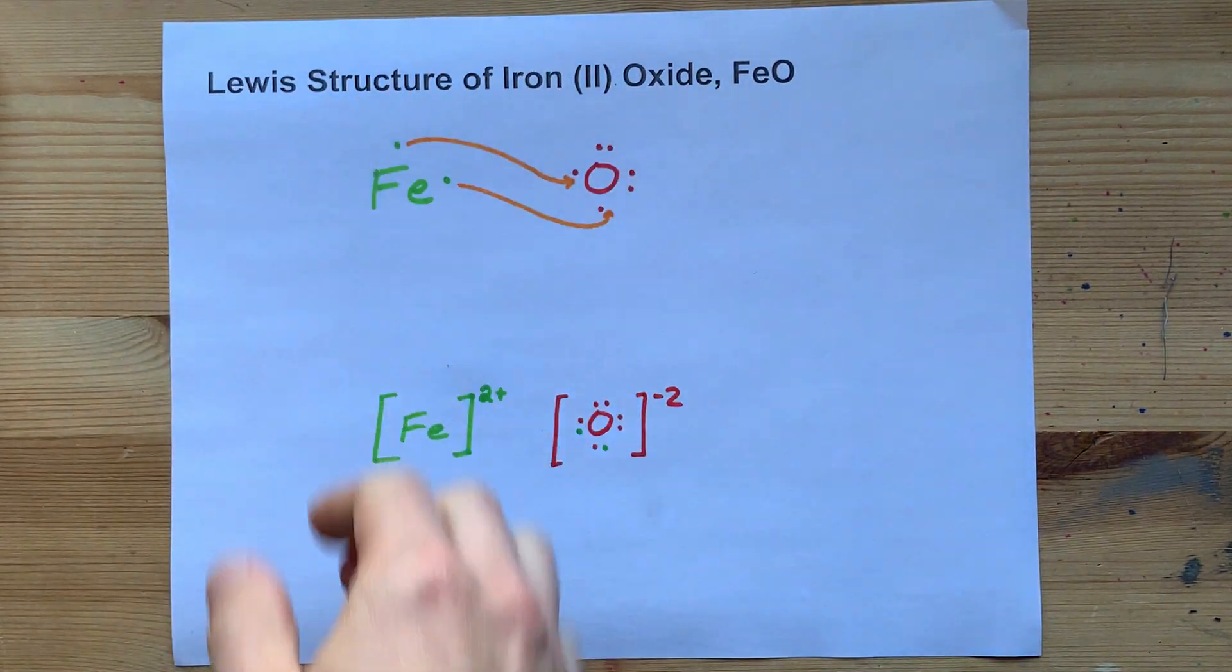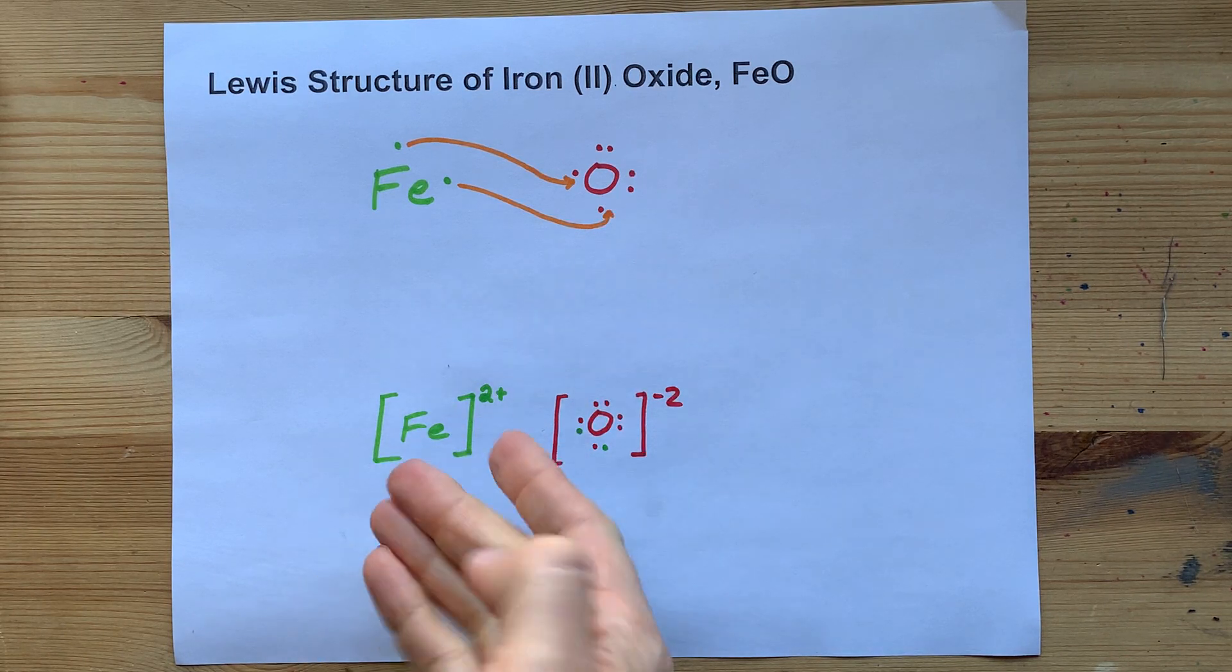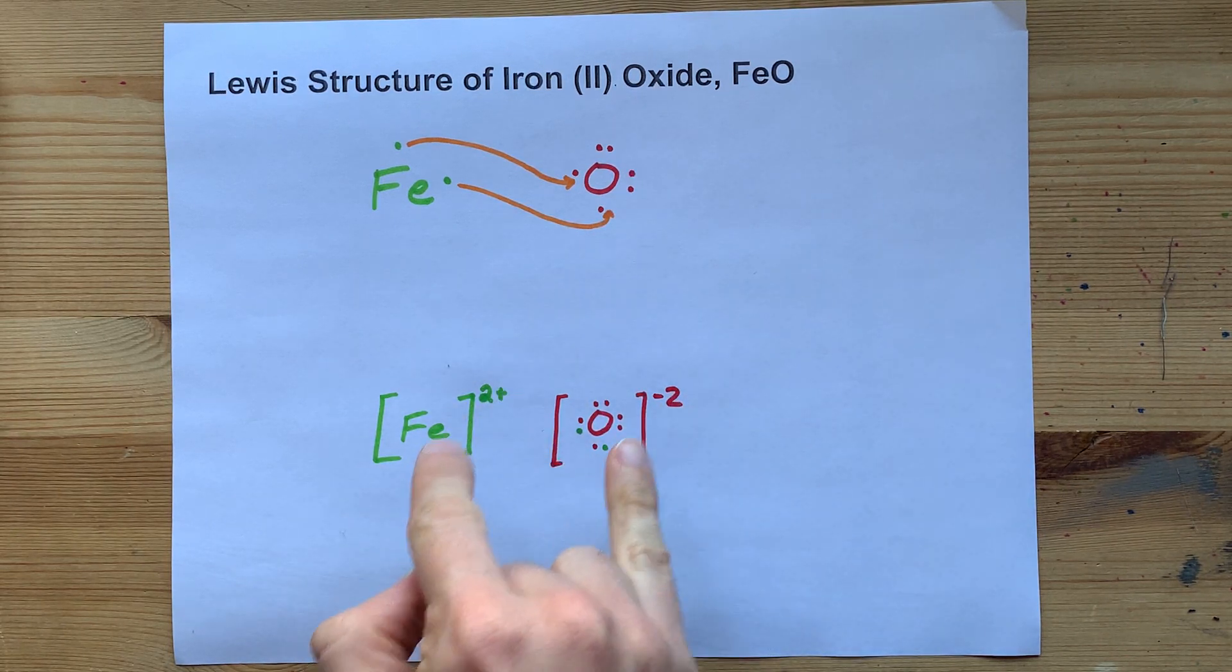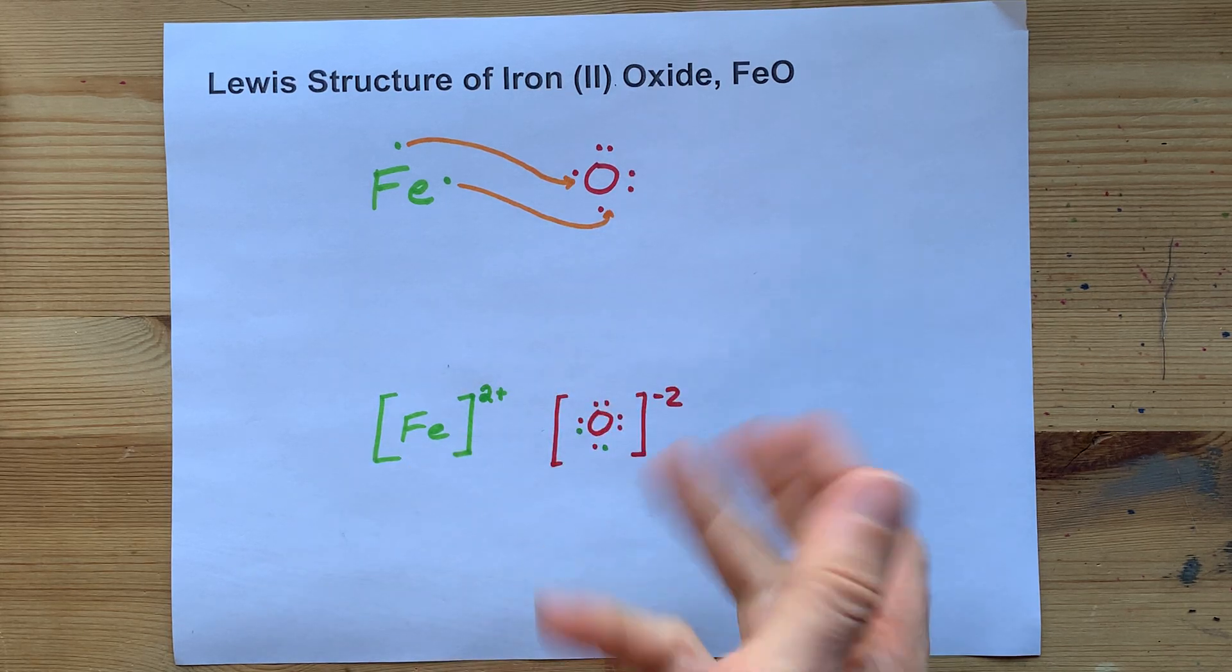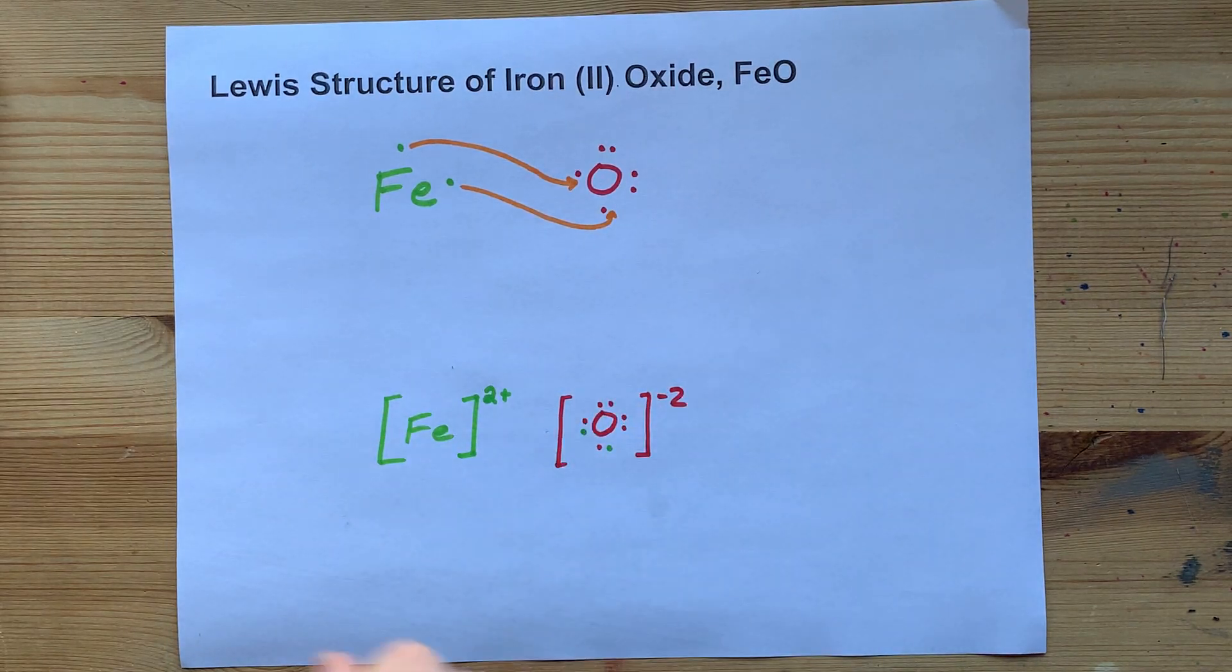The Lewis structure for iron two oxide is these two ions drawn as is with their charges shown around square brackets. We use square brackets for ions. And we're done. This is the Lewis structure.